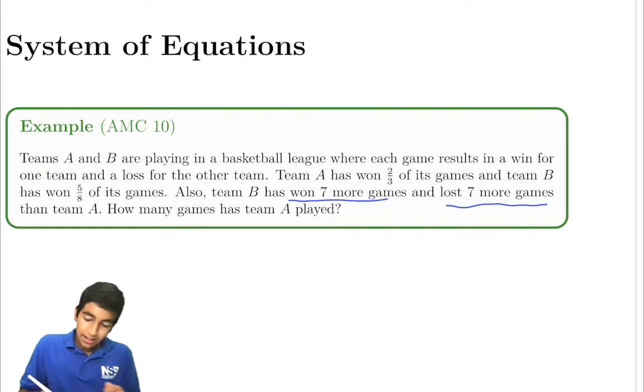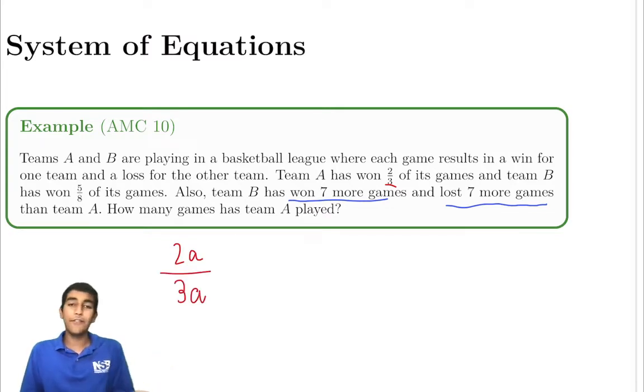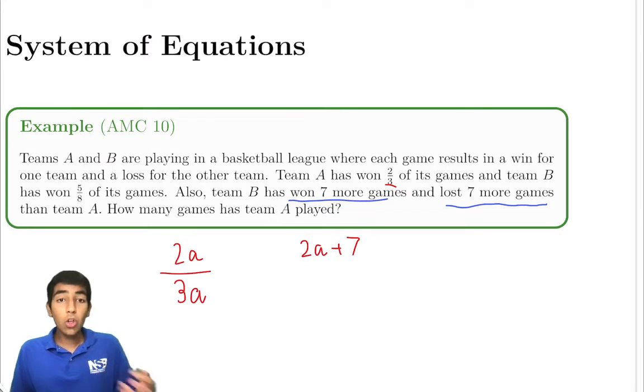Since Team A wins two-thirds of its games, it wins 2A games out of 3A total games, where A is just any variable. Team B has won seven more games, so Team B has won 2A plus 7 games and lost seven more games. In total, Team B has played 14 more games—seven won, seven lost.